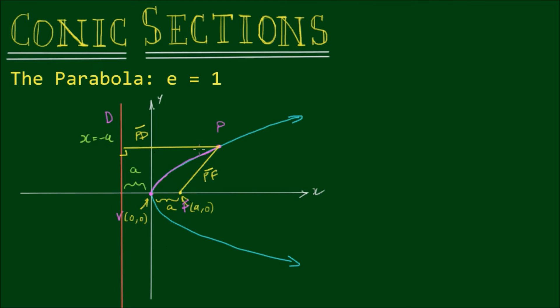So in this diagram one looks longer than the other, but this isn't to scale. So in reality they should be equal to each other. So we have the relationship that PF is equal to PD, by virtue of the fact that PF over PD is equal to the eccentricity, which equals 1.